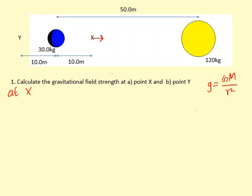Where M is the mass of the object doing the pulling—the bigger mass, in this case the yellow one—and r is the distance from the center of that mass to the point you're interested in.